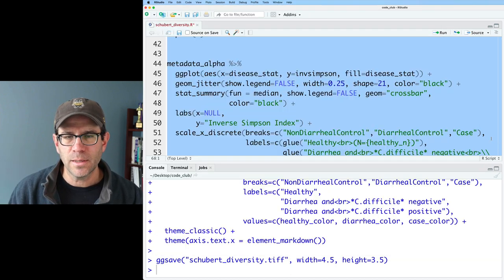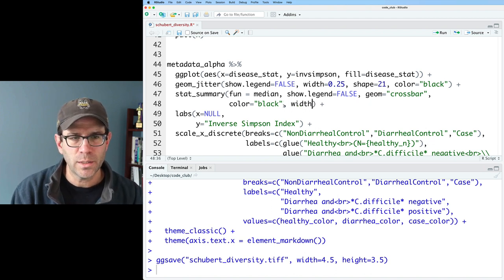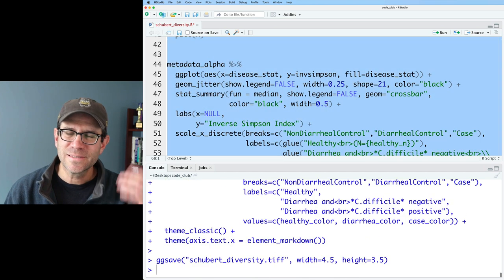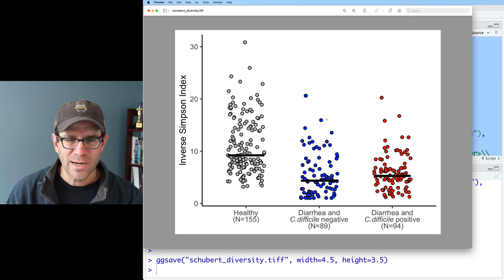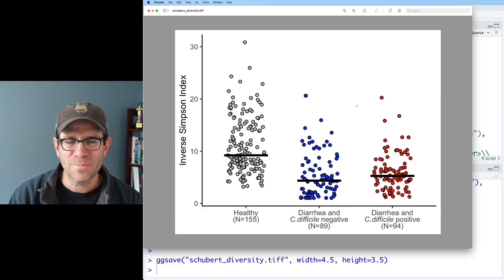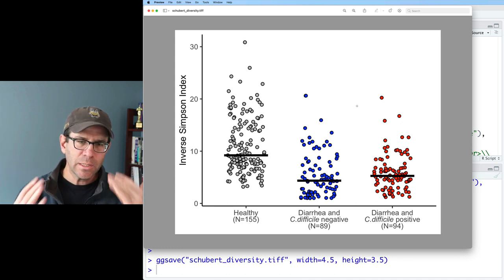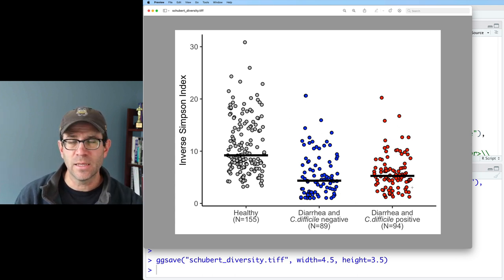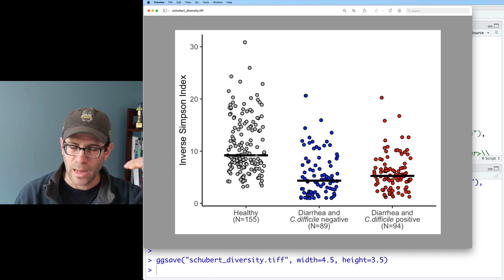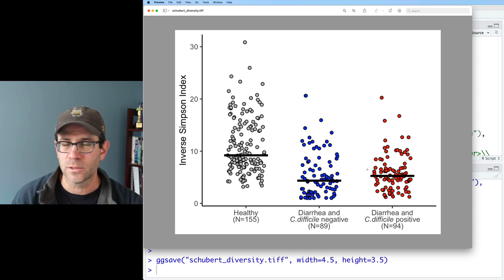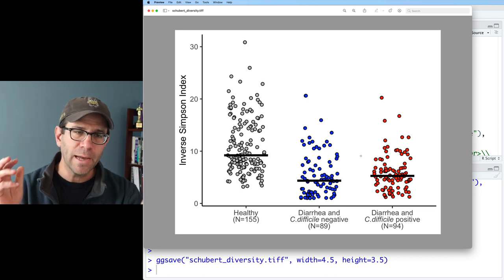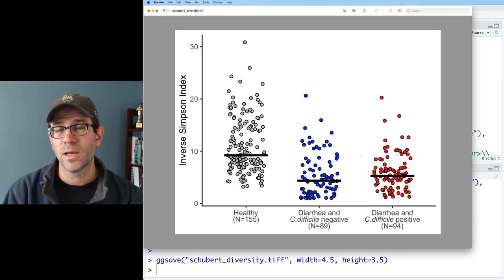I'm going to put this back to fun as median and crossbar. We get our nice horizontal bar across our data. That's perhaps a little bit wider than I would like, so I'll do width equals 0.6. Those black lines on top of the data really call your attention to where the central tendency is, where that median value is. We see that the median value for the healthy is larger than that for the two diarrheal columns, whether or not you're C. diff negative or C. diff positive.